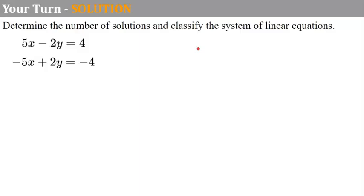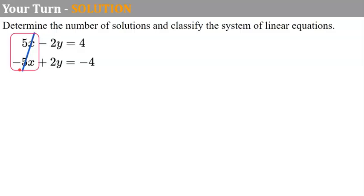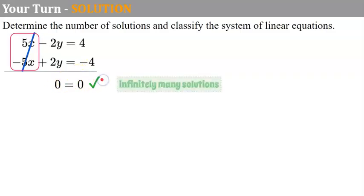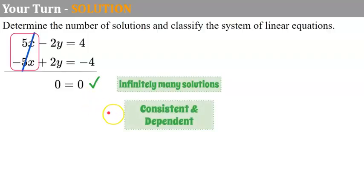Welcome back. I'm going to do these algebraically — that's more practical. The two equations are both in standard form and the coefficients of x are opposites, so I'll add and use elimination. That gives a zero pair for x, a zero pair for negative 2y and 2y, and 4 and negative 4 is also a zero pair. Zero equals zero is a true statement. Therefore, there are infinitely many solutions, and to classify it, it's consistent and dependent.